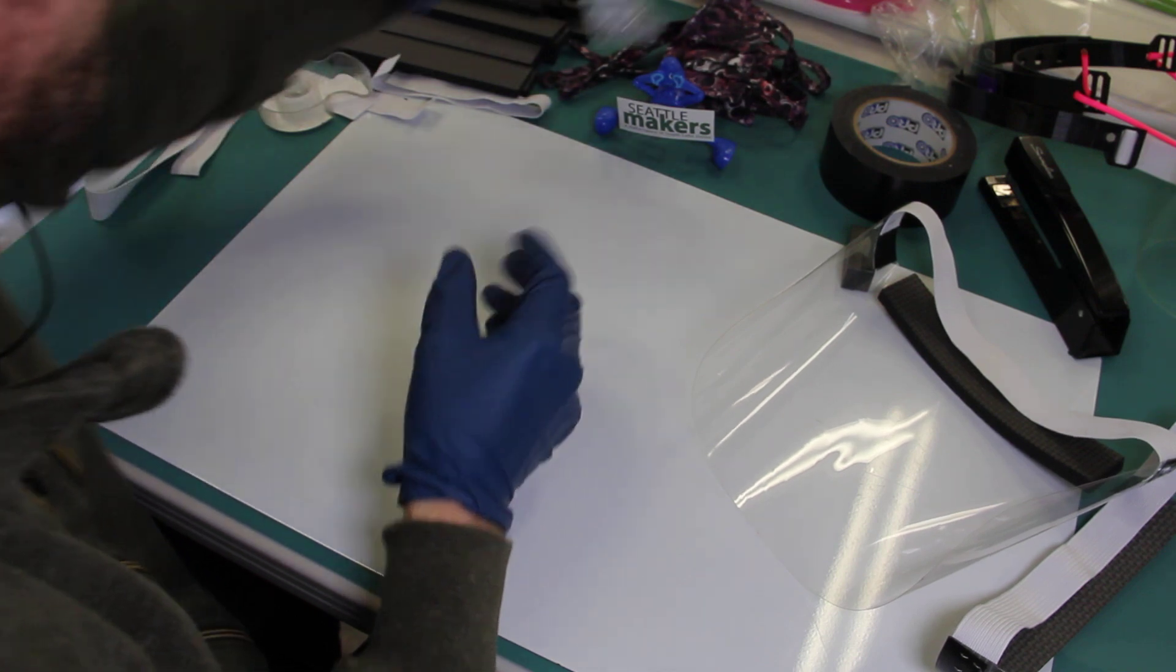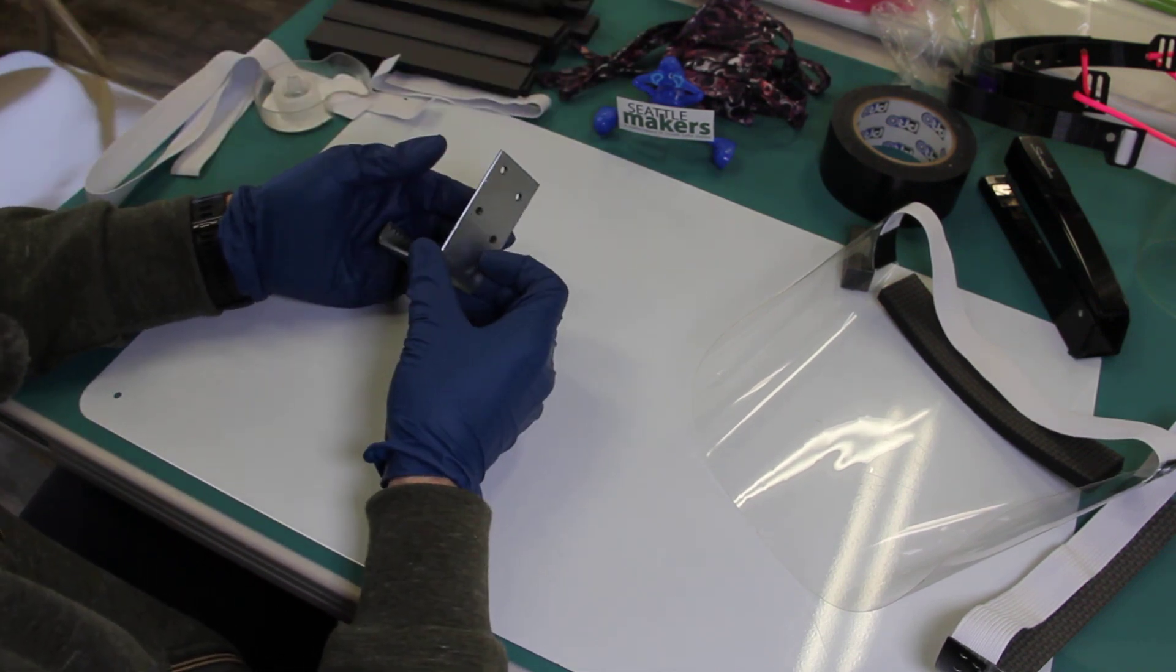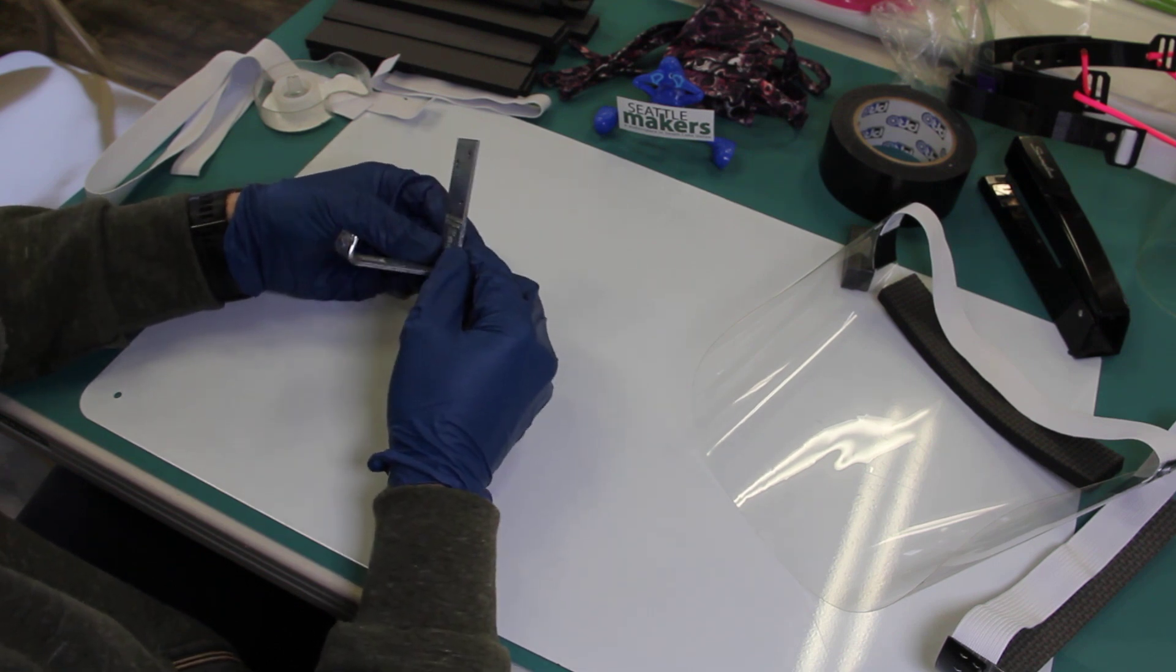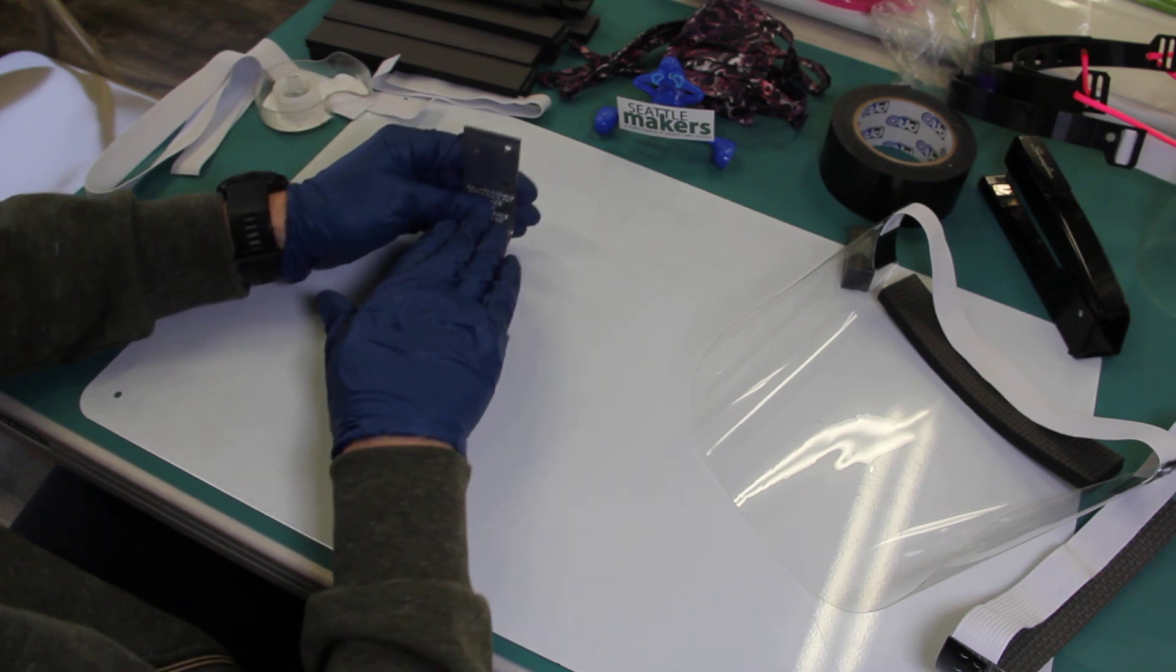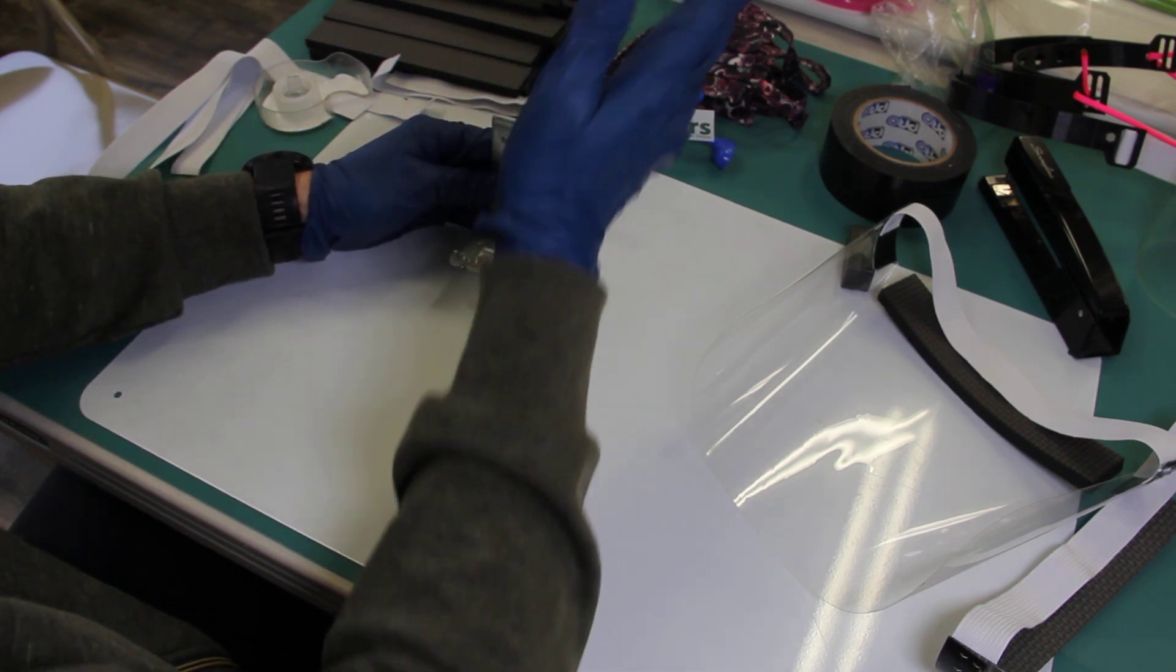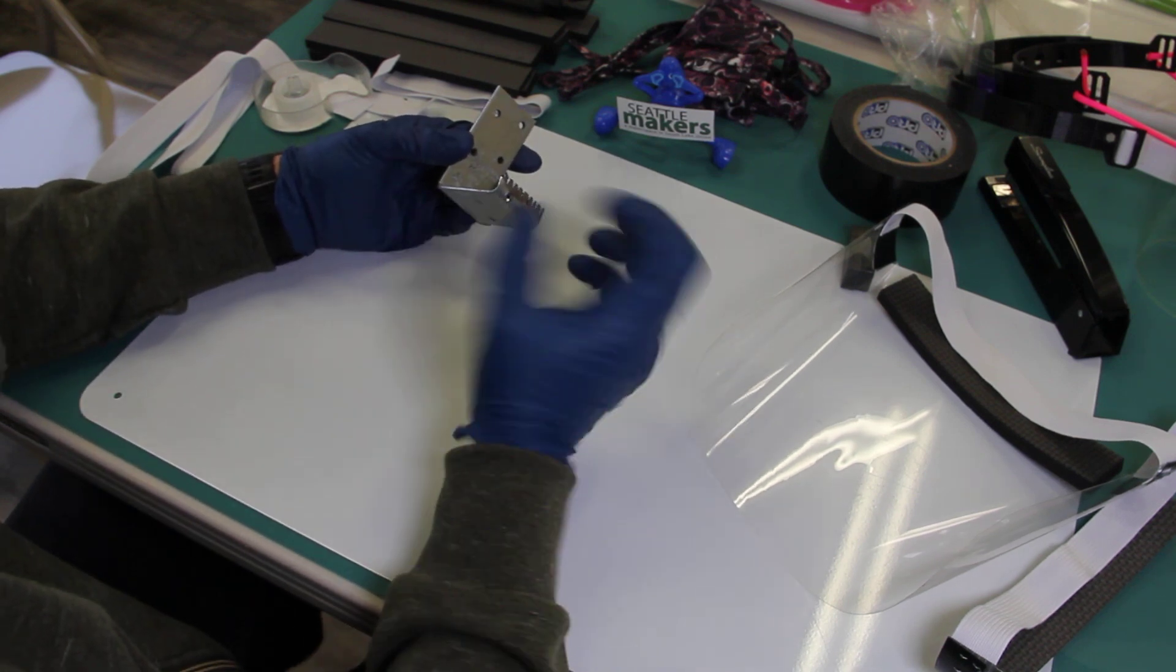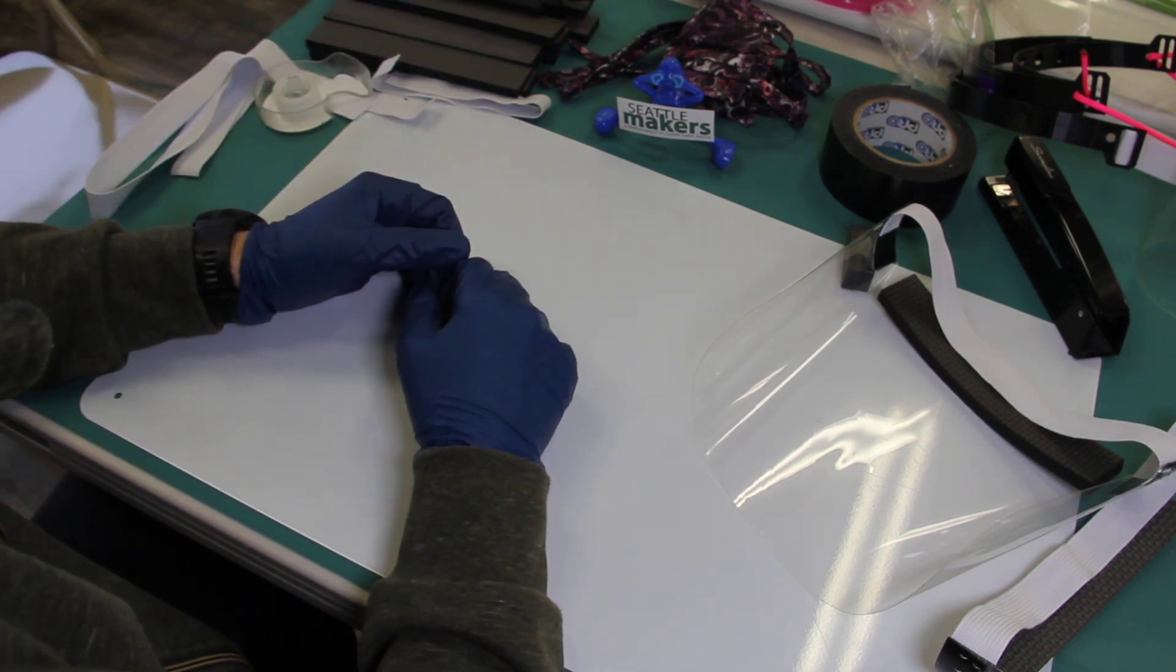And then finally, we have a hands-free door opener made out of a Home Depot bracket, just a metal bracket. So we've bent this and ground it so that you can put your foot on the inside of the door. Once the latch is disabled, you can use your feet to open and close the door without having to touch the doorknob. So you can see all that and more at seattlemakers.org.